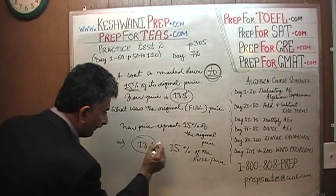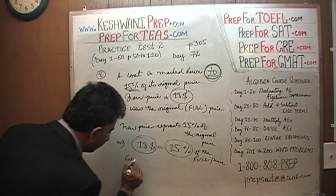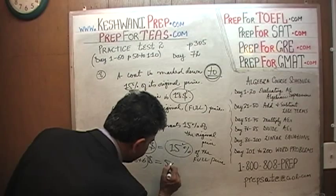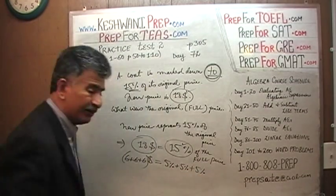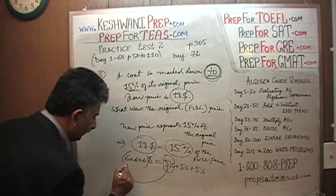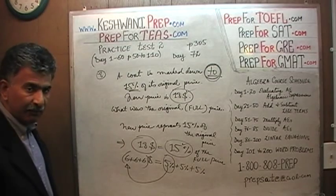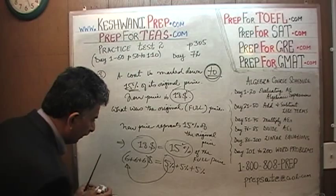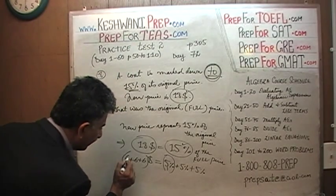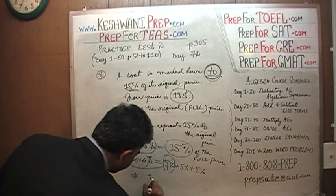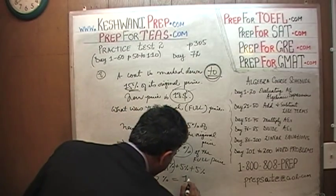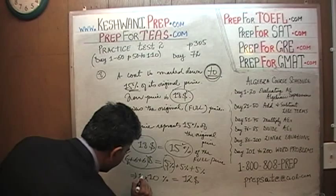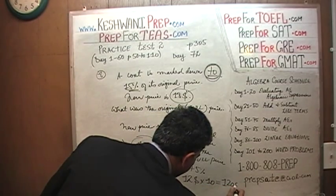We're going to use the quick method: break $18 into three parts — 6 plus 6 plus 6. That equals 15 percent, which is 5 percent plus 5 percent plus 5 percent. So 5 percent equals $6. If 5 percent equals $6, then 10 percent must equal $12. We want to find the full price, which is 100 percent. 100 percent is 10 times as much as 10 percent. So 100 percent equals 10 times $12, which is $120.